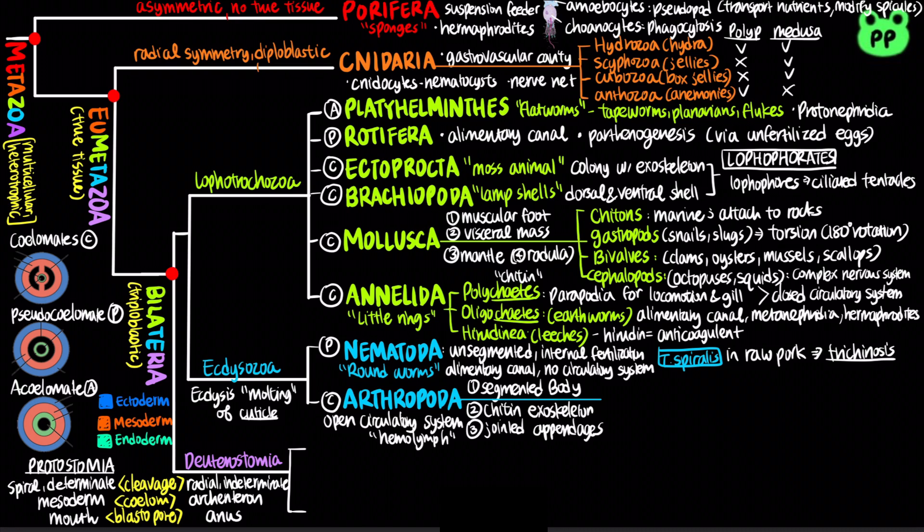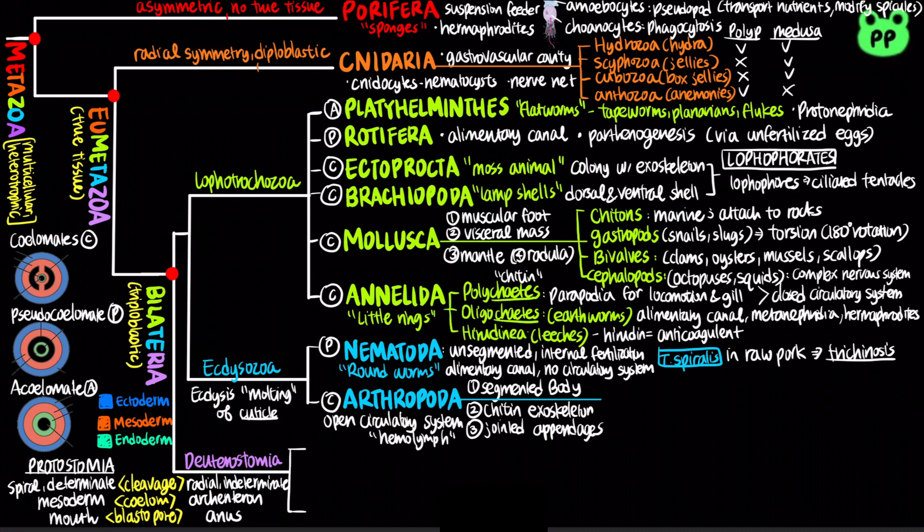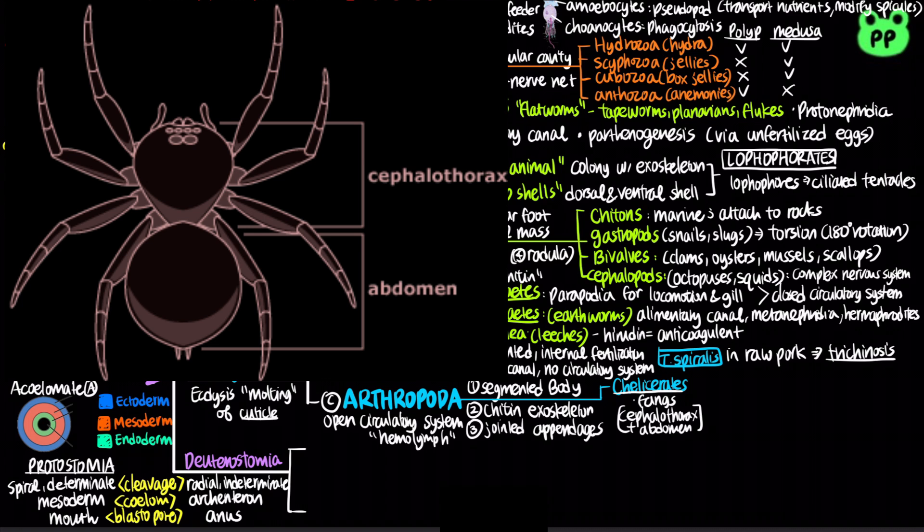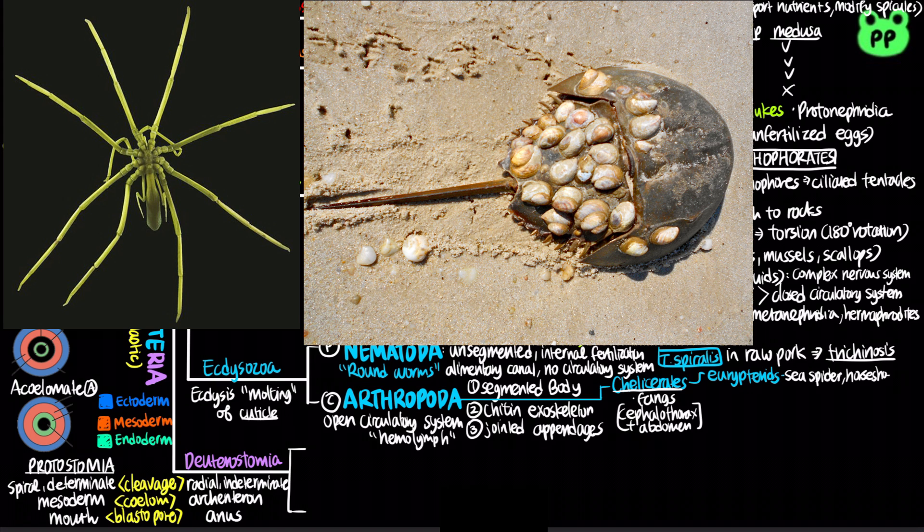Arthropods are further classified into four main groups. Chelicerates are named for their claw-like feeding appendages called chelicerae, which serve as pincers or fangs. Chelicerates have two body segments: an anterior cephalothorax and a posterior abdomen. The earliest chelicerates were eurypterids, which include sea spiders and horseshoe crabs.